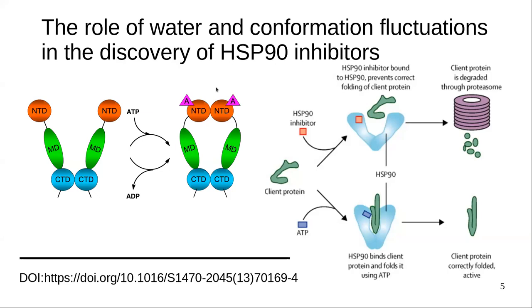Inhibiting the activity of this protein is an idea by which we can kill and stop the function of more than 200 known client proteins that depend on this protein. This is an example of a client protein — if we have one inhibitor and inhibit the function at the ATP site at the N-terminal domain, we are able to induce proteasomal degradation of this client protein. But if we don't inhibit, then the cancer survives and continues. So that is the idea.